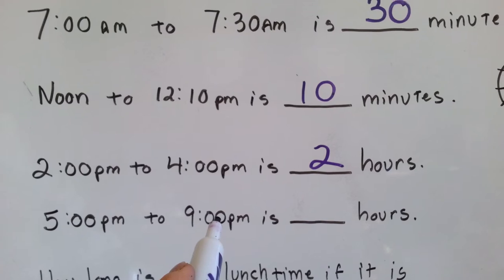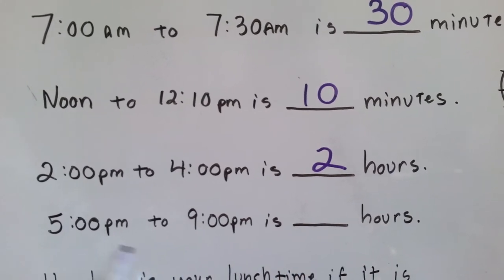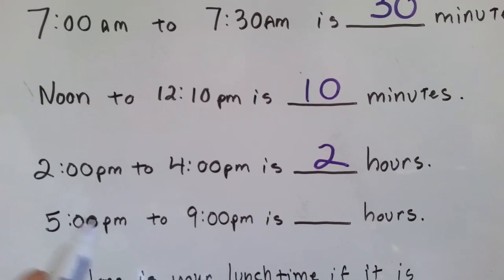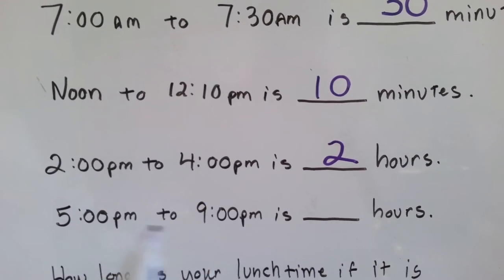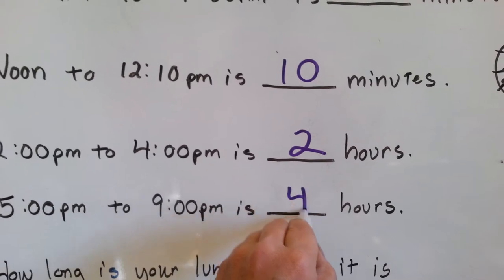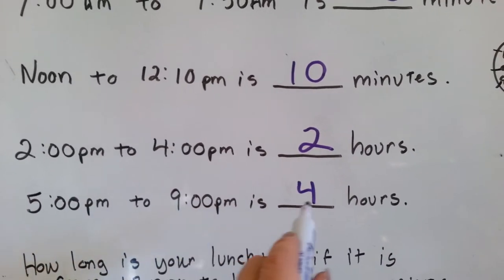From 5 p.m. to 9 p.m. is how many hours? Well, it's just like adding or subtracting. 9 take away 5 is 4. From 5 p.m. to 9 p.m. is 4 hours.